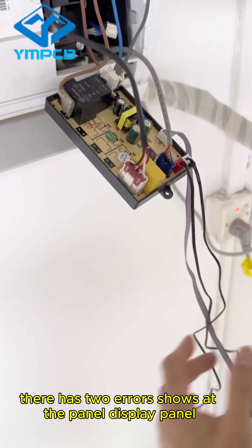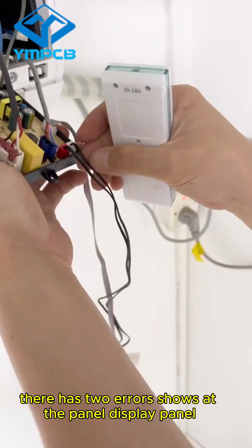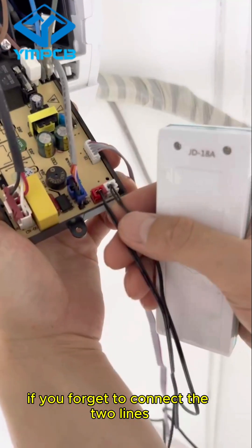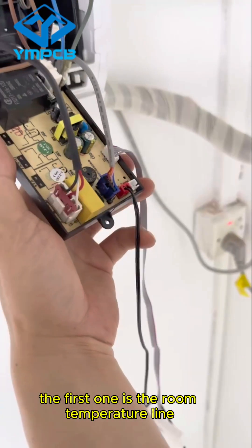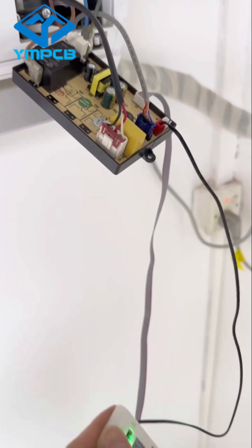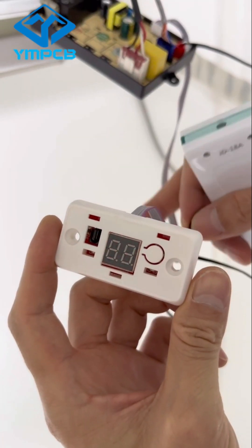There has two arrows shows as the panel, display panel. If you forget to connect the two lines. First one is the long temperature line. Unconnected it. It shows E1. L1.